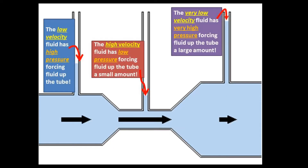You can see three different types of flow here. On the left, medium flow: low velocity fluid has high pressure, forcing fluid up the tube a large amount. High velocity fluid has low pressure, forcing fluid up the tube a small amount. So the greater the velocity of the fluid, the lower the pressure — they are inversely proportionate.